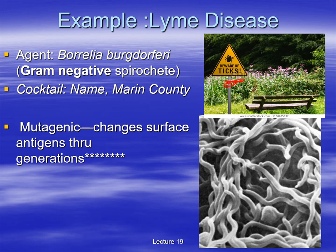Borrelia burgdorferi is mutagenic — it changes its surface proteins from one generation to the next. The surface antigens change in a small but significant manner, so there are mild changes in the proteins on the surface, which will be the antigens for the immune system. The incubation time is about seven to fourteen days.